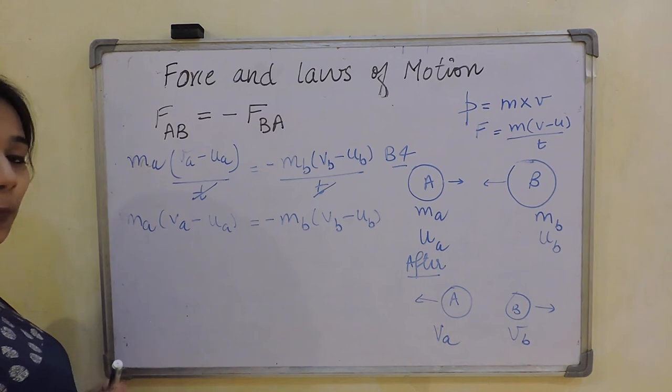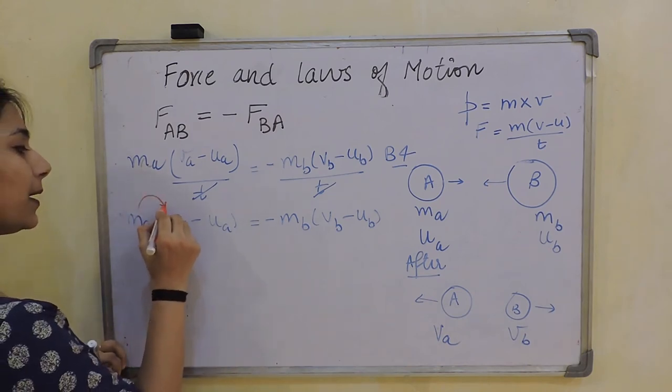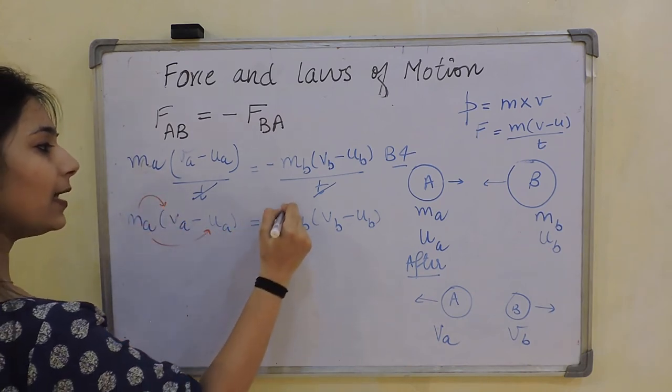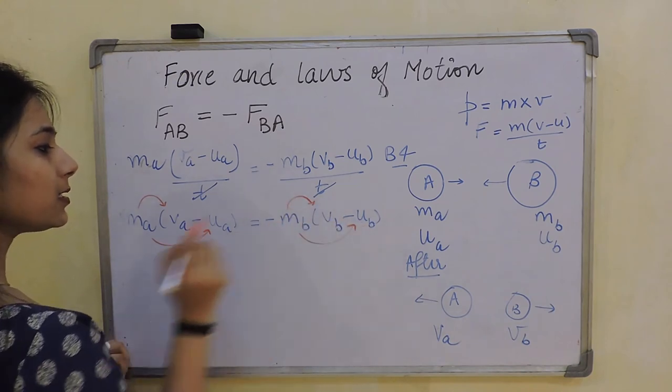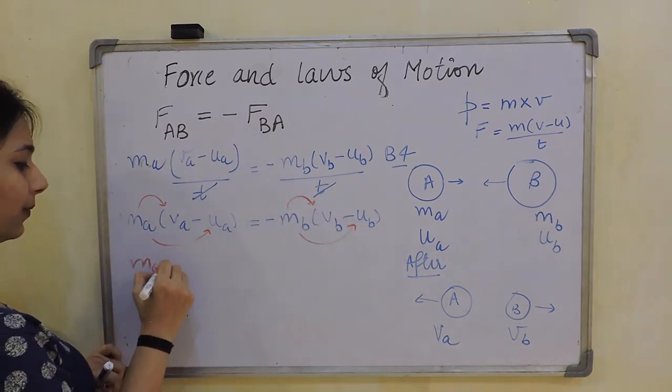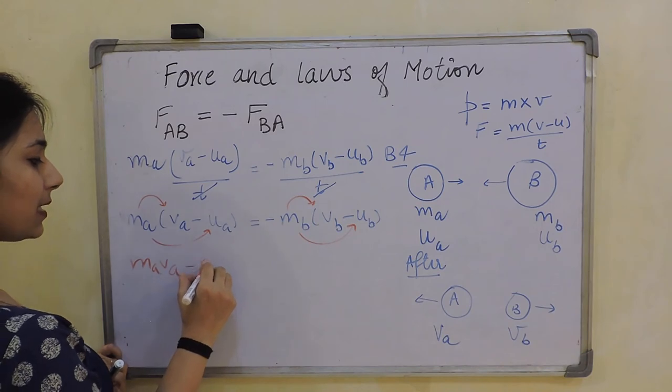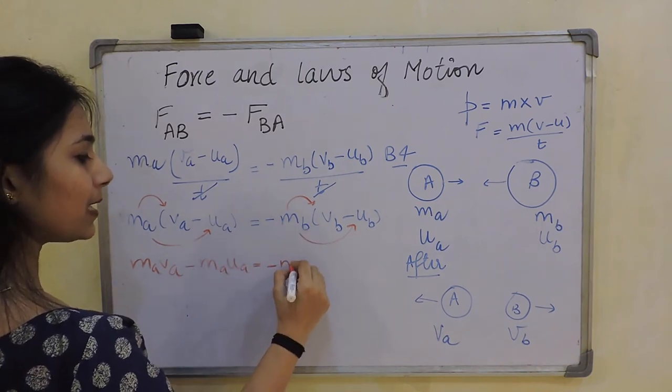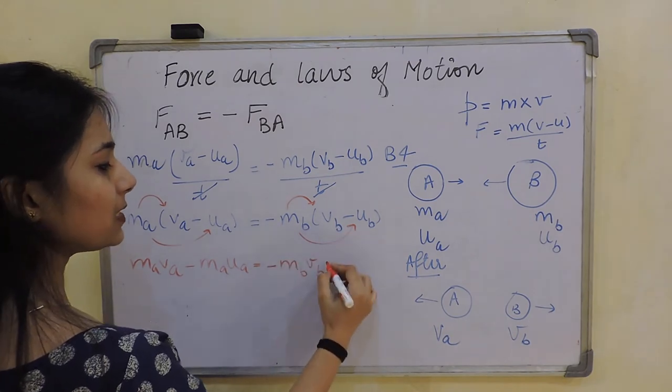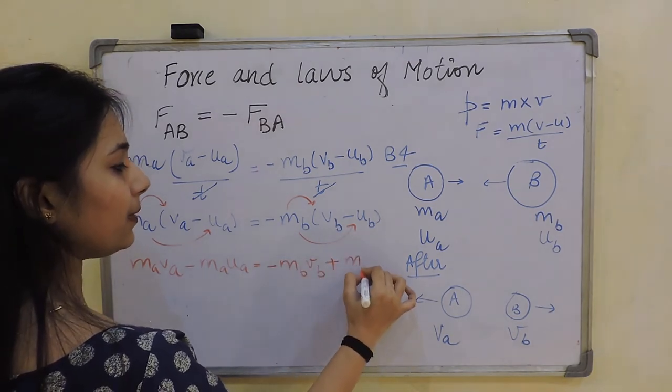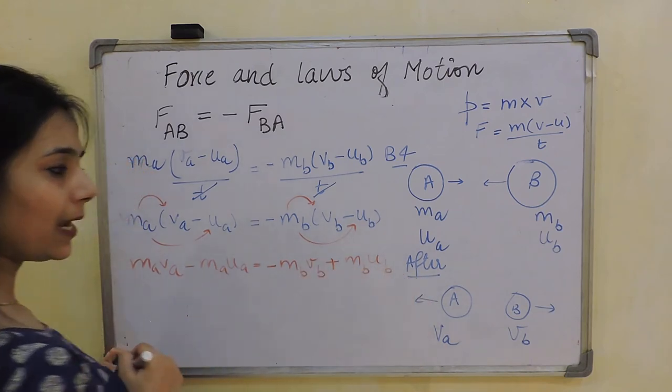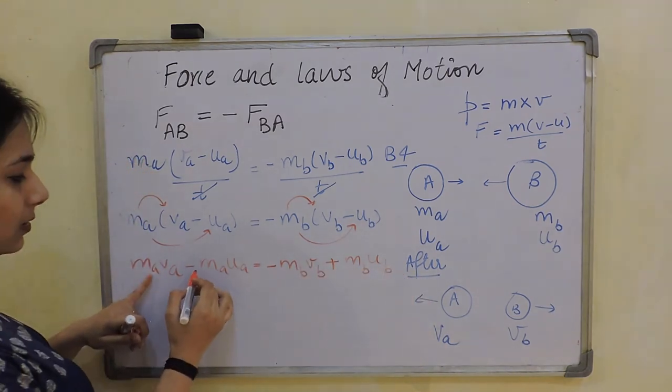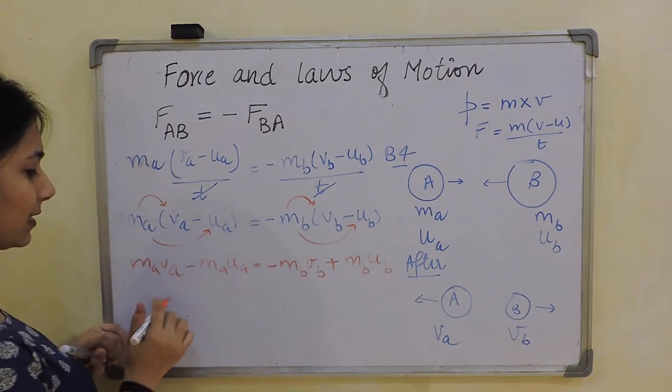Now next what I can do is open the brackets. When you open the brackets, you need to multiply these two together and these two together. So I'll get mₐvₐ - mₐuₐ equals minus m_bv_b, and minus minus will be plus, so plus m_bu_b.